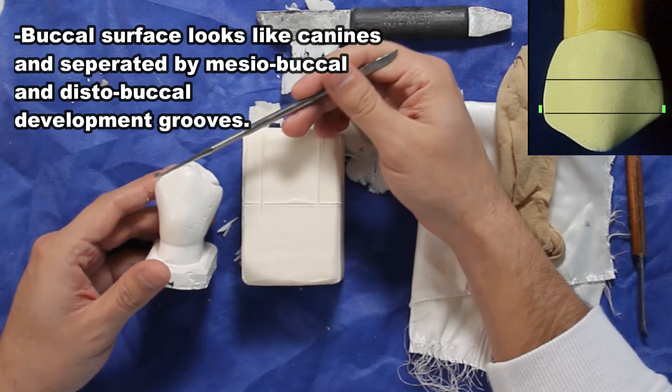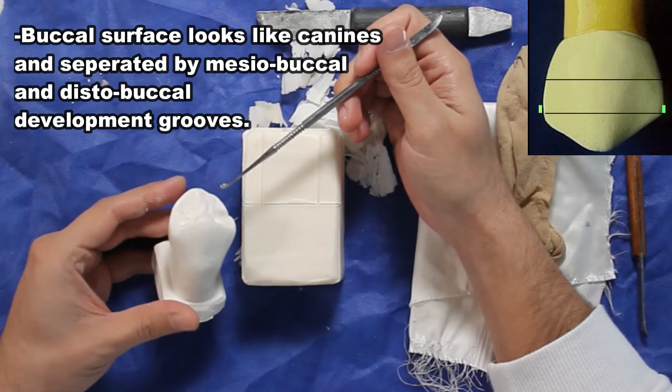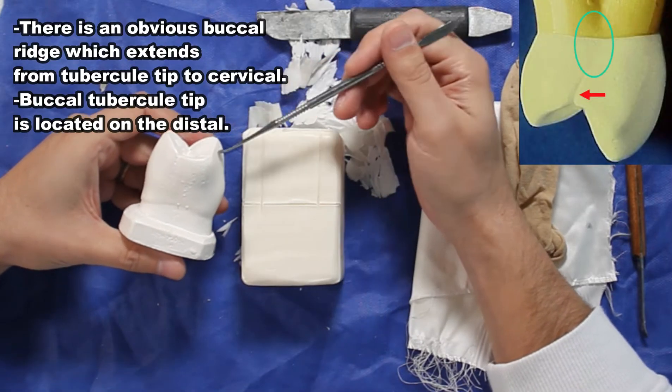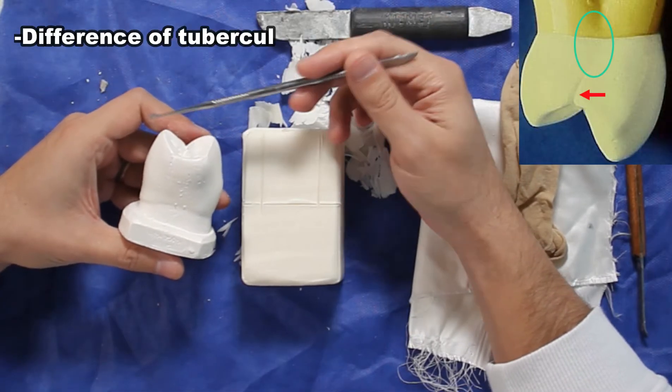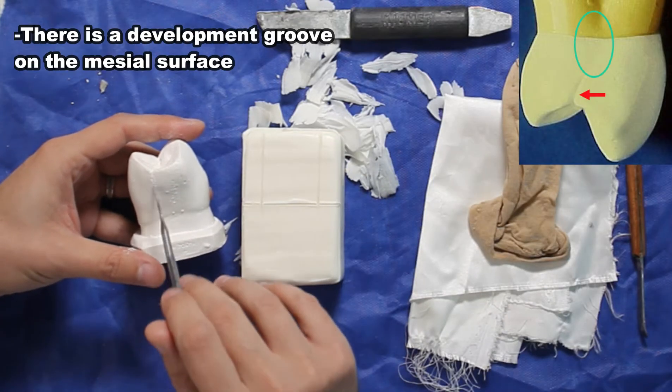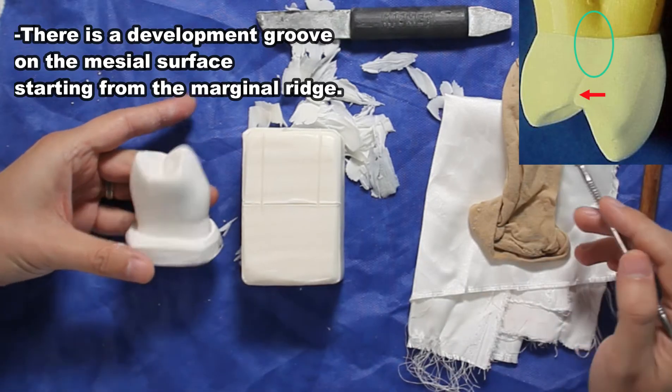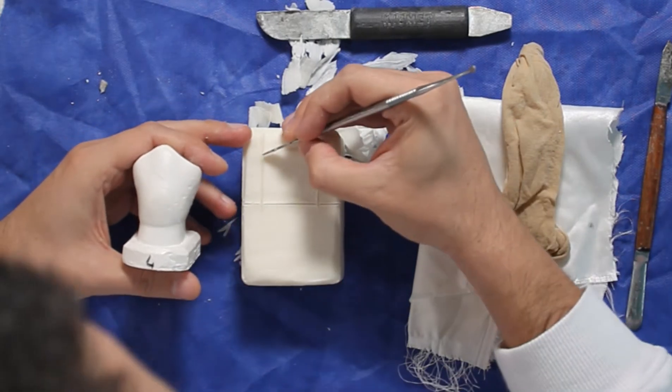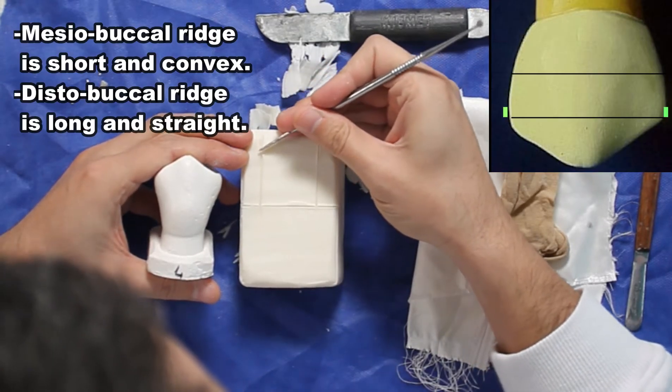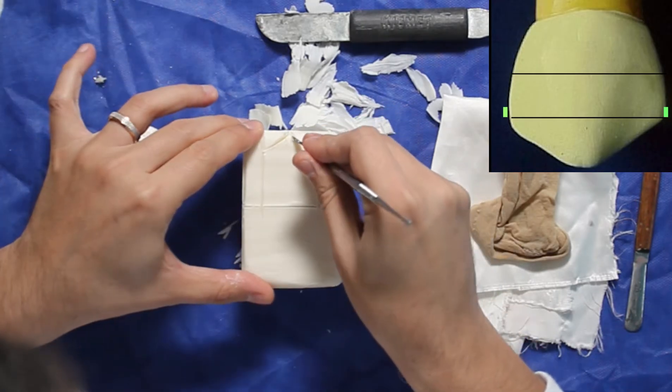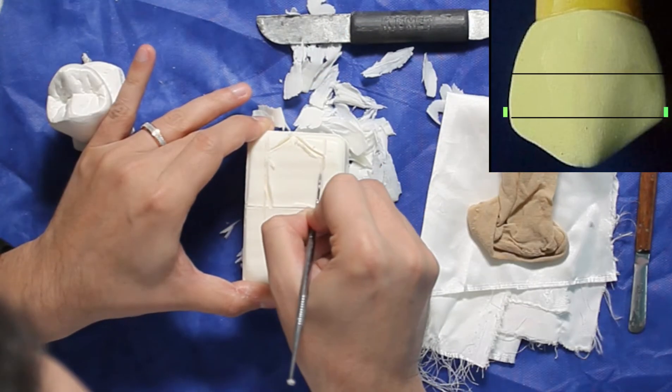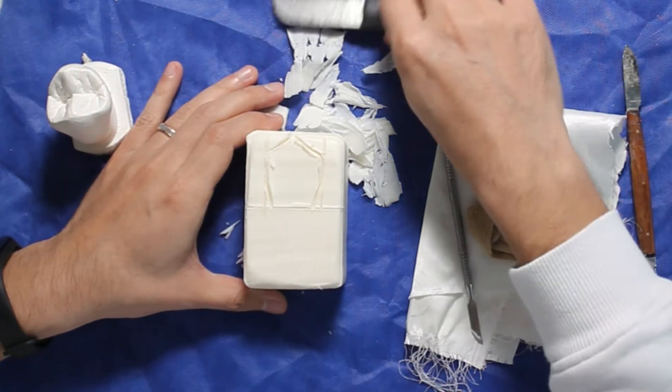Buccal surface looks like canine and is separated by mesobuccal and distobuccal developmental grooves. There is an obvious buccal reach which extends from tubercle tip to cervical. Buccal tubercle tip is located on the distal. There is a developmental groove on the mesial surface starting from the marginal reach. This tubercle reach is short and convex, this tubercle reach is long and straight. Now we will draw this on the soap. So buccal face looks almost like canine's buccal face.